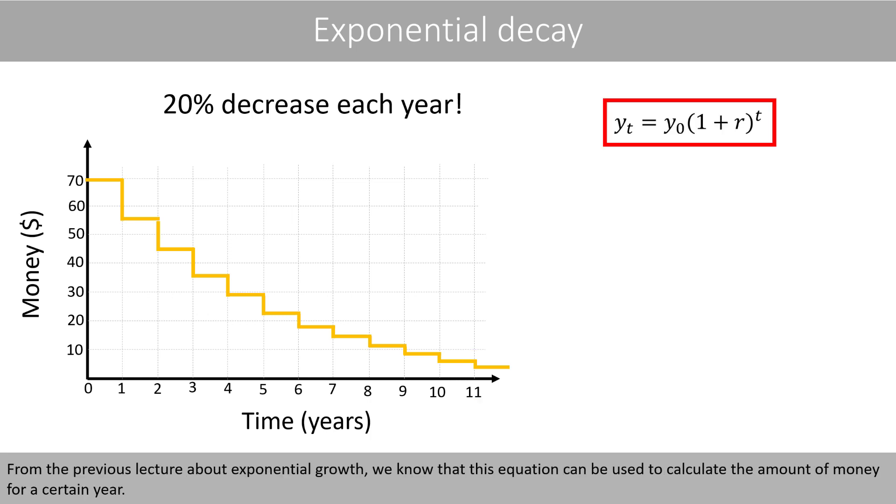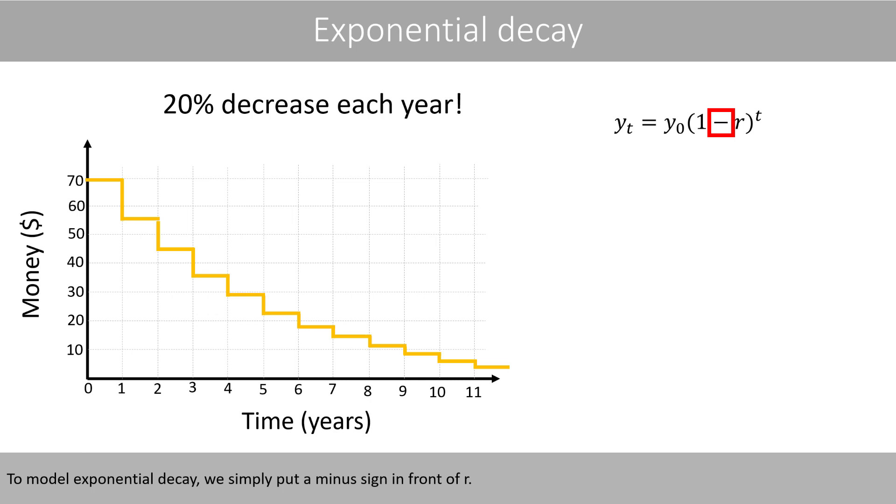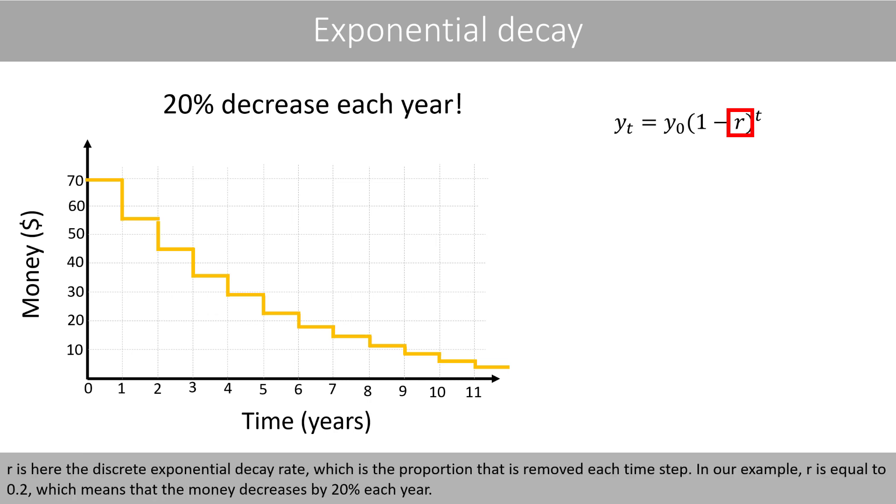From the previous lecture about exponential growth, we know that this equation can be used to calculate the amount of money for a certain year. To model exponential decay, we simply put a minus sign in front of r. r is here the discrete exponential decay rate, which is the proportion that is removed each time step.